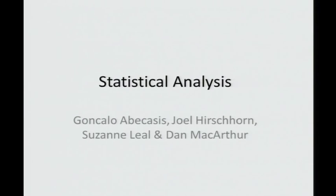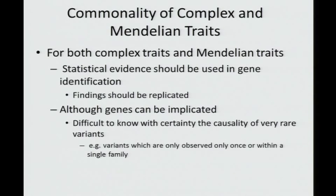I'm going to talk about statistical analysis, and as you'll see it is really not independent of study design. We're going to revisit many things that came up before, trying to put more of a spin on actual statistical testing. I'd like to draw a commonality between complex and Mendelian traits, showing that many problems for Mendelian traits also apply to complex traits—although we can implicate a gene, it's more difficult to say about causality of individual variants, particularly those that are very rare.